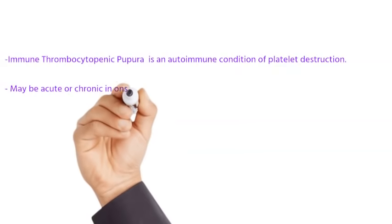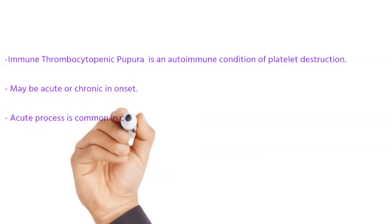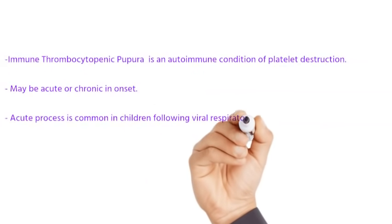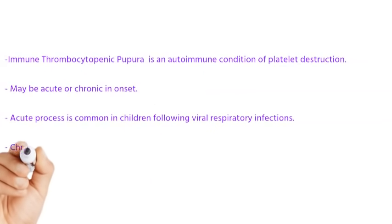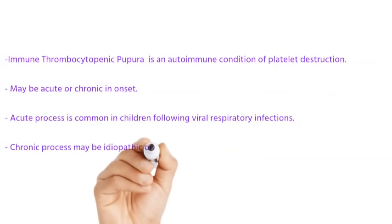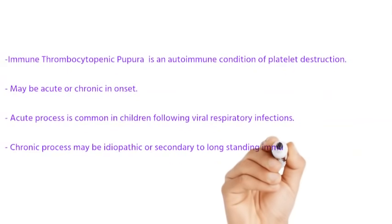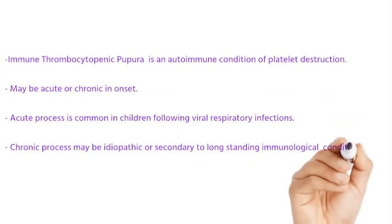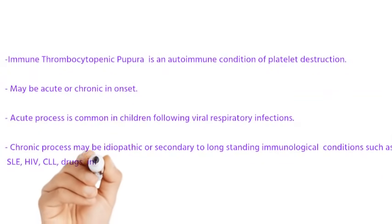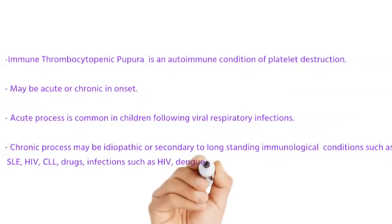It may be an acute or chronic process. The acute process is commonly seen in children following respiratory viral infections. The chronic process may be idiopathic or primary, or it may be secondary to long-standing diseases such as lupus. It may also be seen in various infections like HIV and dengue, in CLL, and various drugs are also implicated.